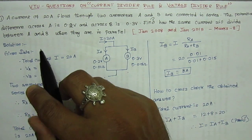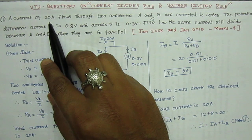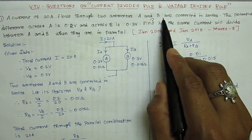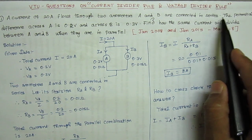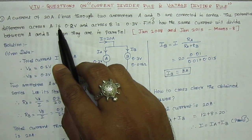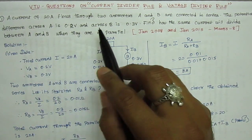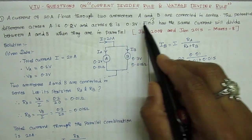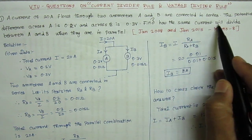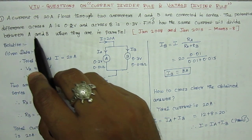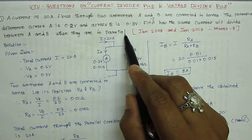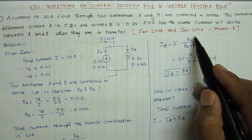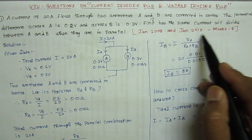Problem number 1. A current of 20 amps flows through 2 ammeters A and B connected in series. The potential difference across A is 0.2 volt and across B is 0.3 volt. Find how the same current will divide between A and B when they are connected in parallel. This was asked in Jan 2008 and Jan 2015 for 8 marks.